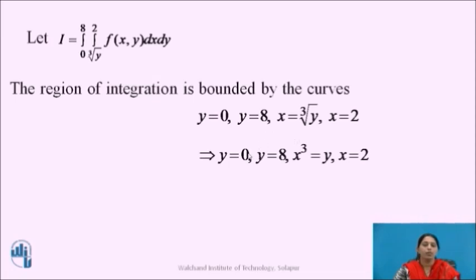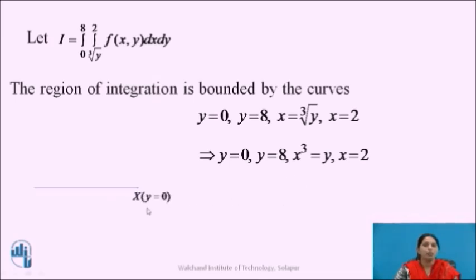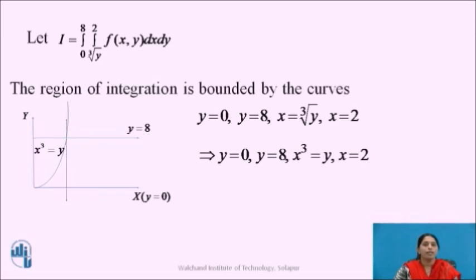Now we will rewrite the equations: y equal to 0, y equal to 8. Cubing the equation x equals to cube root of y gives us x cube equals to y, and x equals to 2. To find the region of integration, draw these curves: the x-axis, which is the curve y equal to 0, the y-axis, the line y equals to 8 which is parallel to the x-axis, the curve x cube equals to y, and the line x equals to 2, which is parallel to the y-axis.